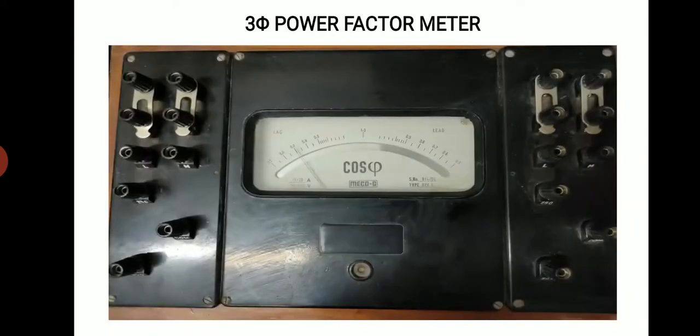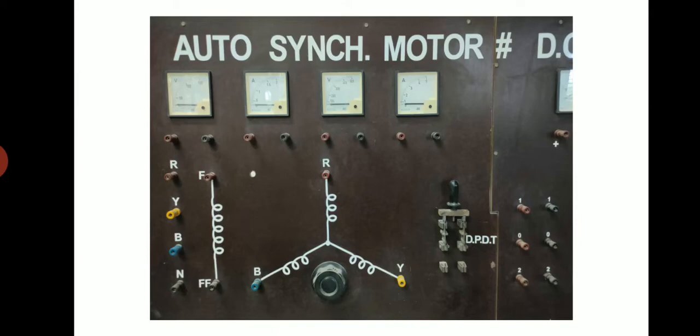We'll require a three-phase power factor meter to measure the power factor of the machine. You'll also require a panel which has the terminals of autosynchronous motors. Here as you can see on the left hand side, the F and FF are the field terminals of the autosynchronous motors and the RYB terminals are the stator terminals of the autosynchronous motors.